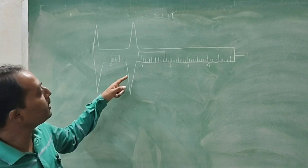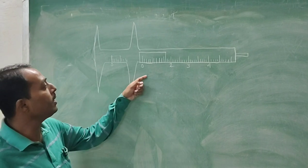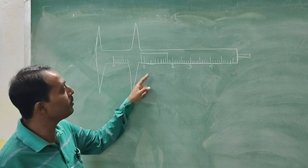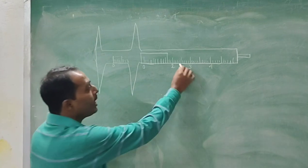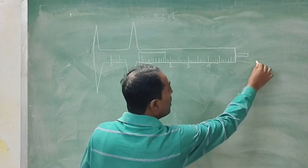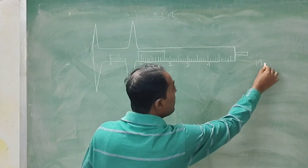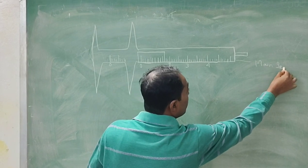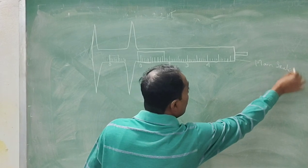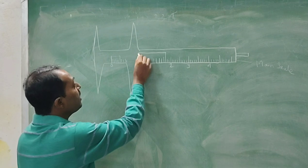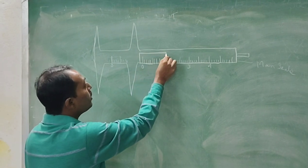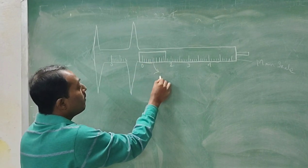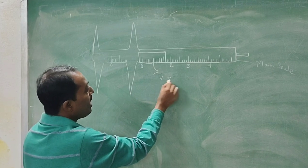In the Vernier Calipers instrument, you know there are two types of scale. One is the main scale — this is the lower portion, that is the main scale. And another one is the Vernier scale. There is a very small portion in the Vernier, it is called the Vernier scale.